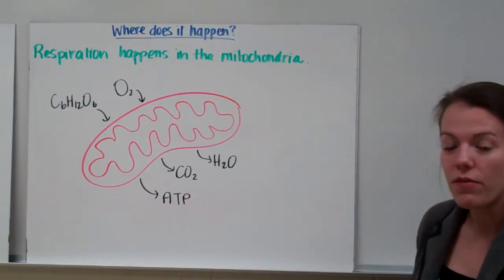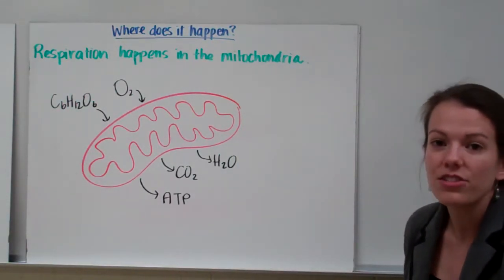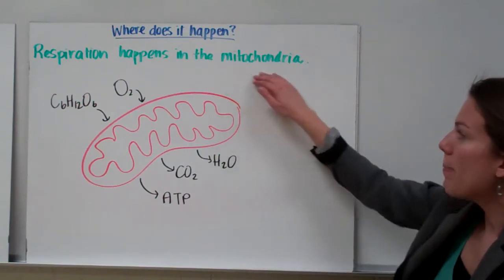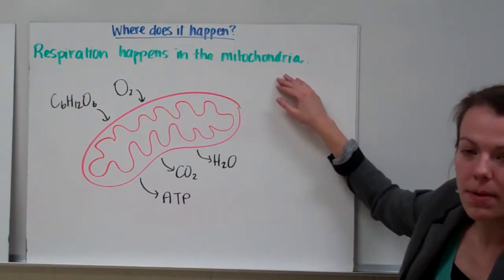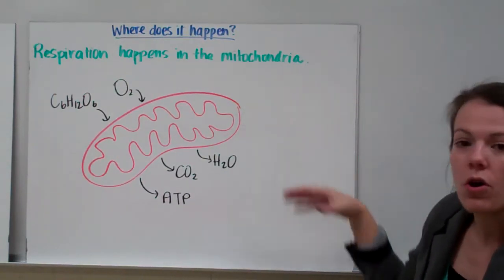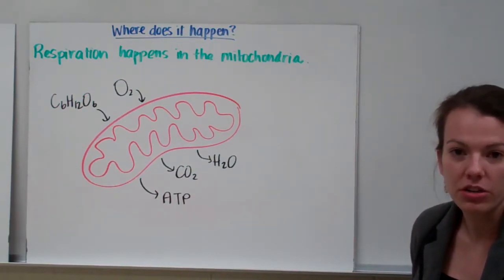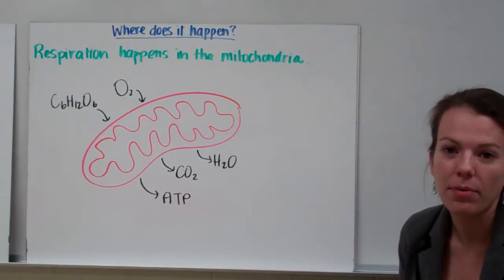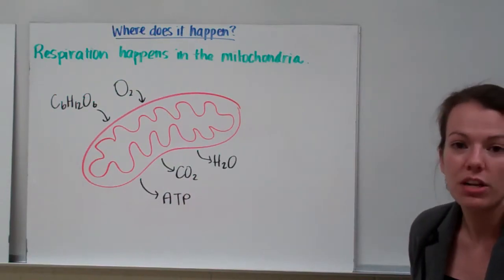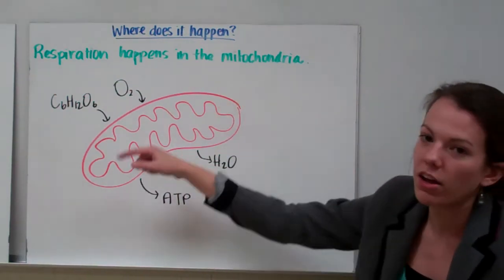Just like you had to know that photosynthesis happens in the chloroplast, you need to know that respiration happens in the mitochondrion. Again, mitochondria for plural. Remember we said the mitochondria breaks down food to release energy? Well, now you know the fancy word for that process is respiration.